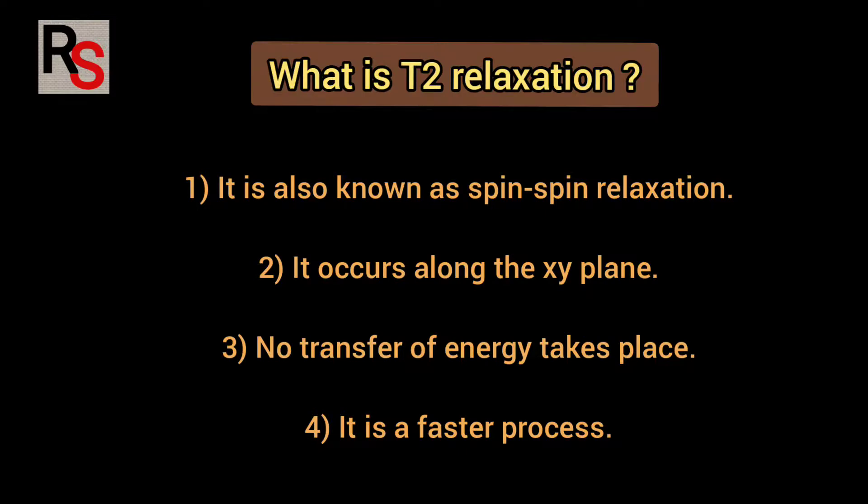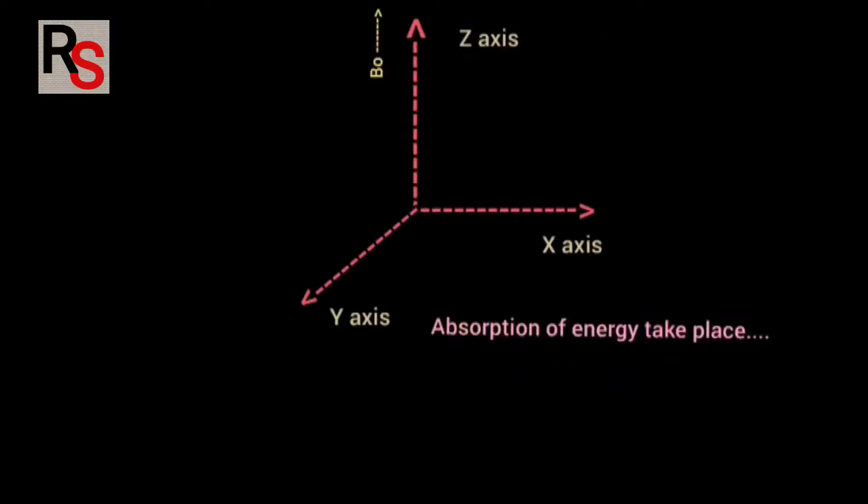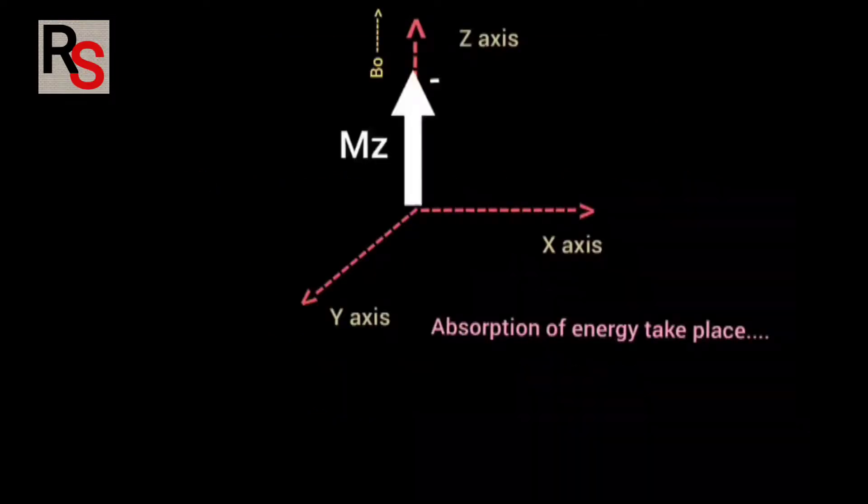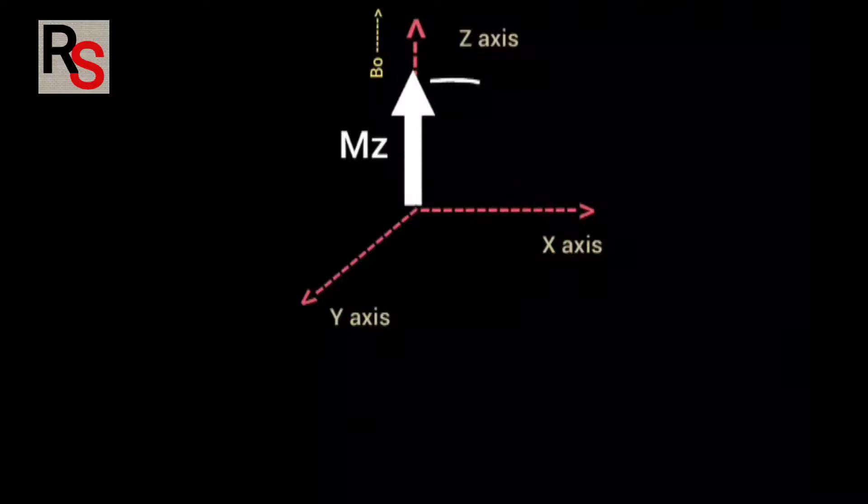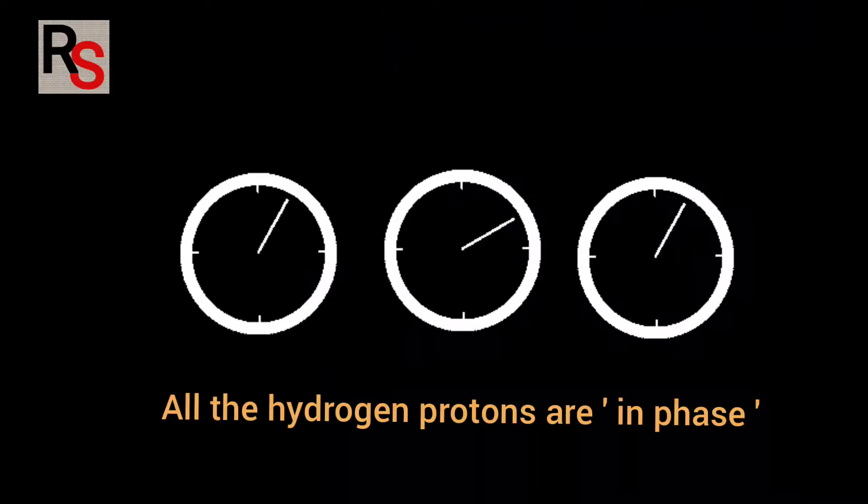See when net magnetic vector flips into XY axis by the RF pulse all the hydrogen protons are in phase as I told you earlier. If you look at them from the top you will find all are spinning together. This is called in phase.